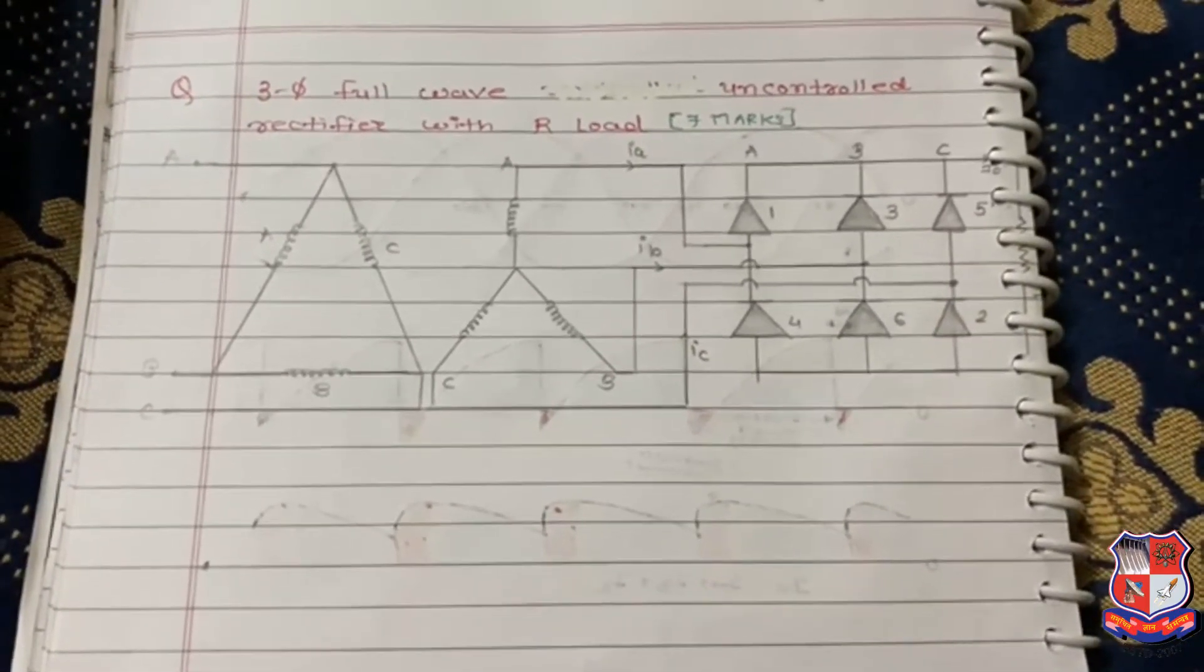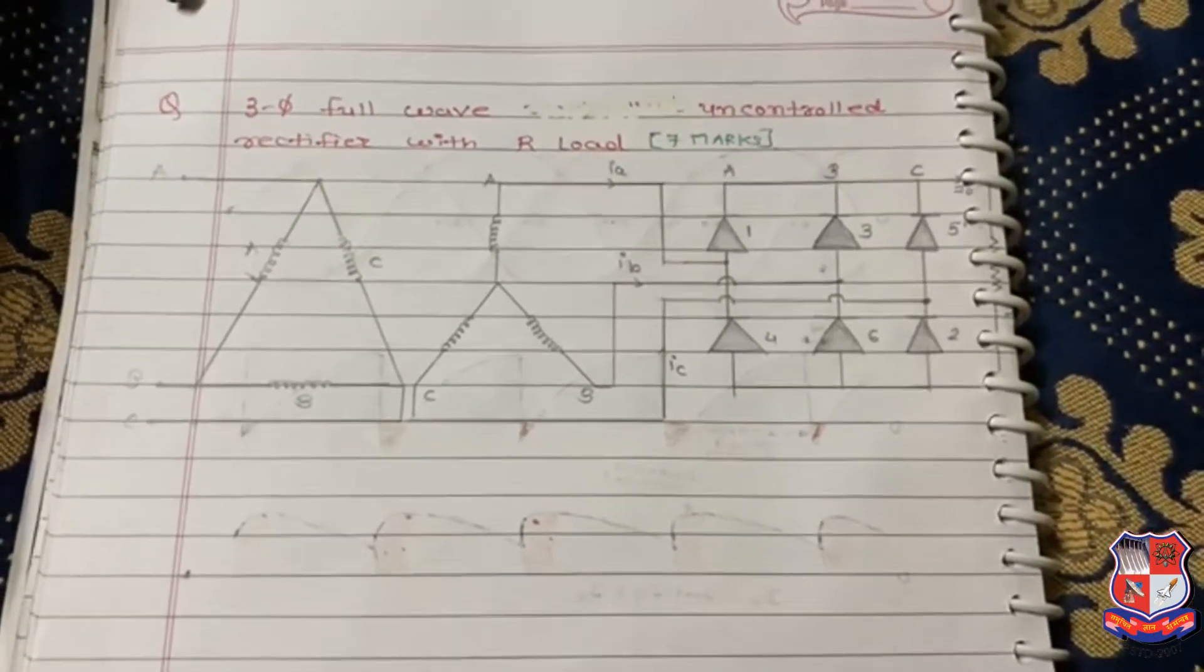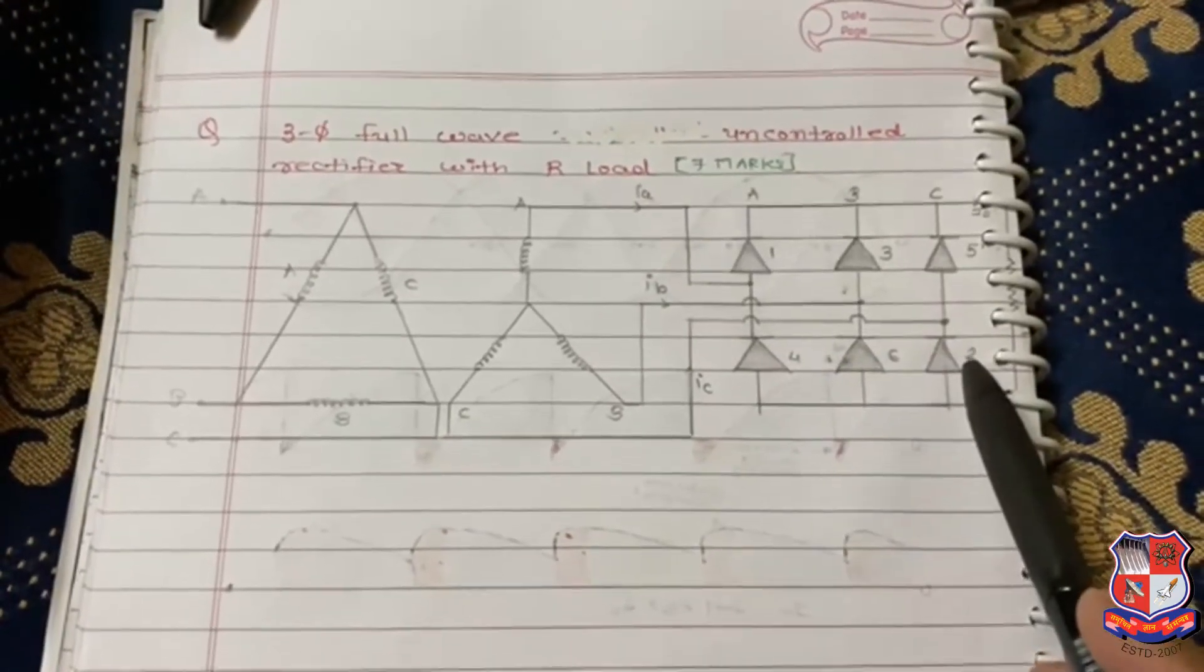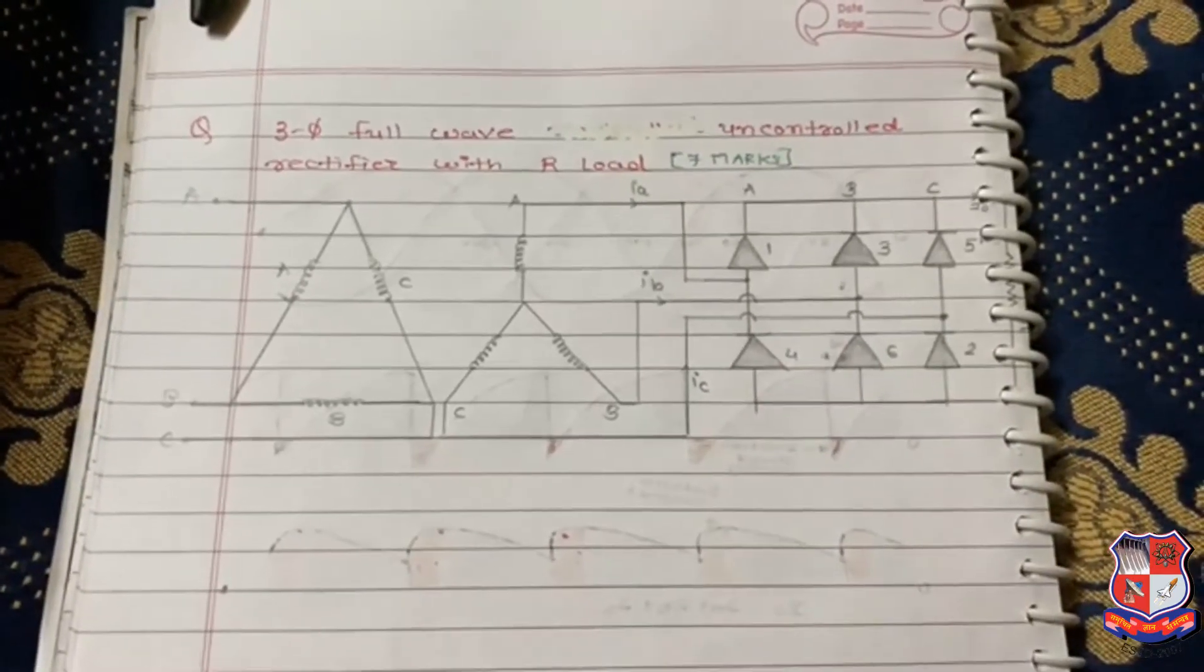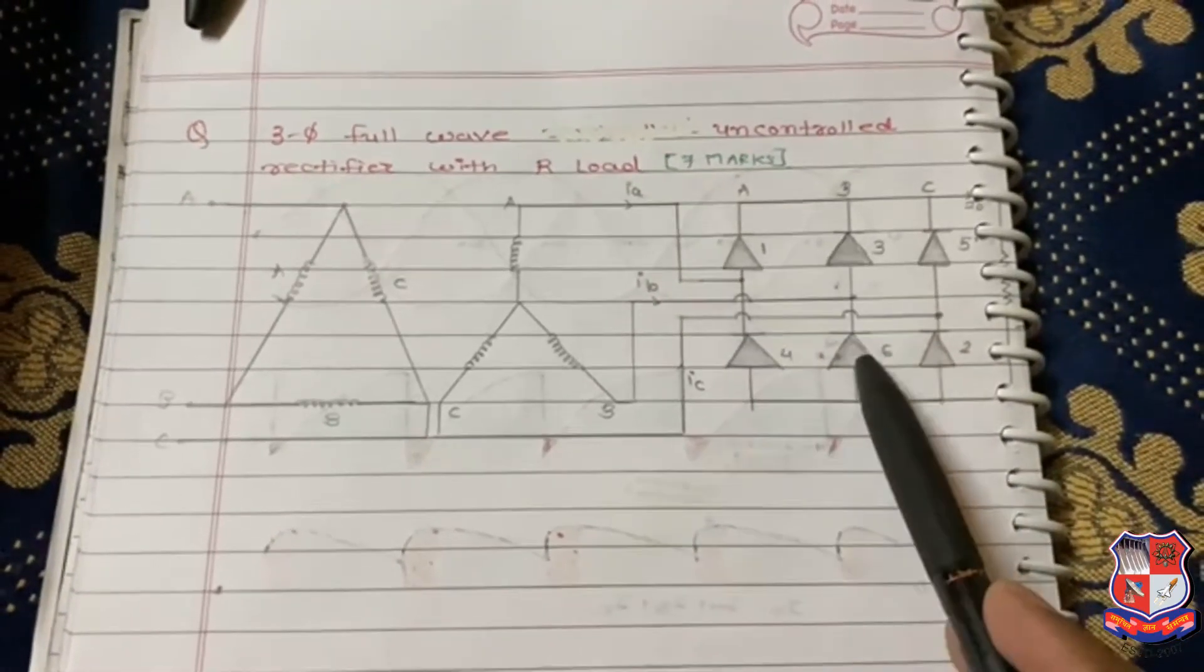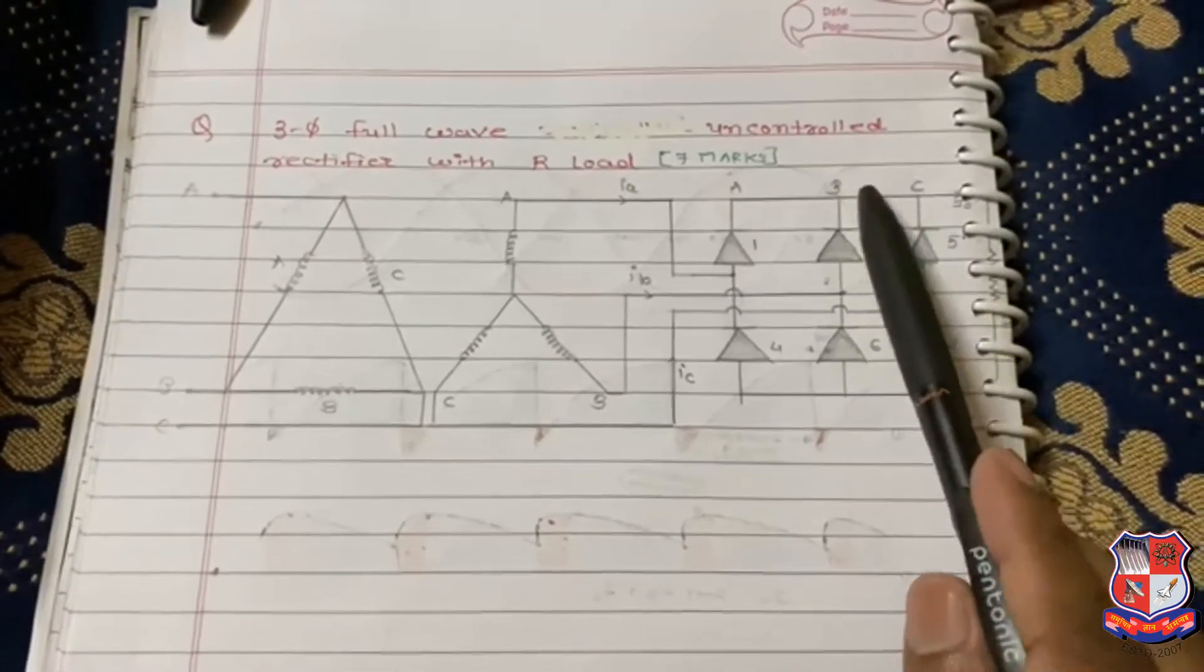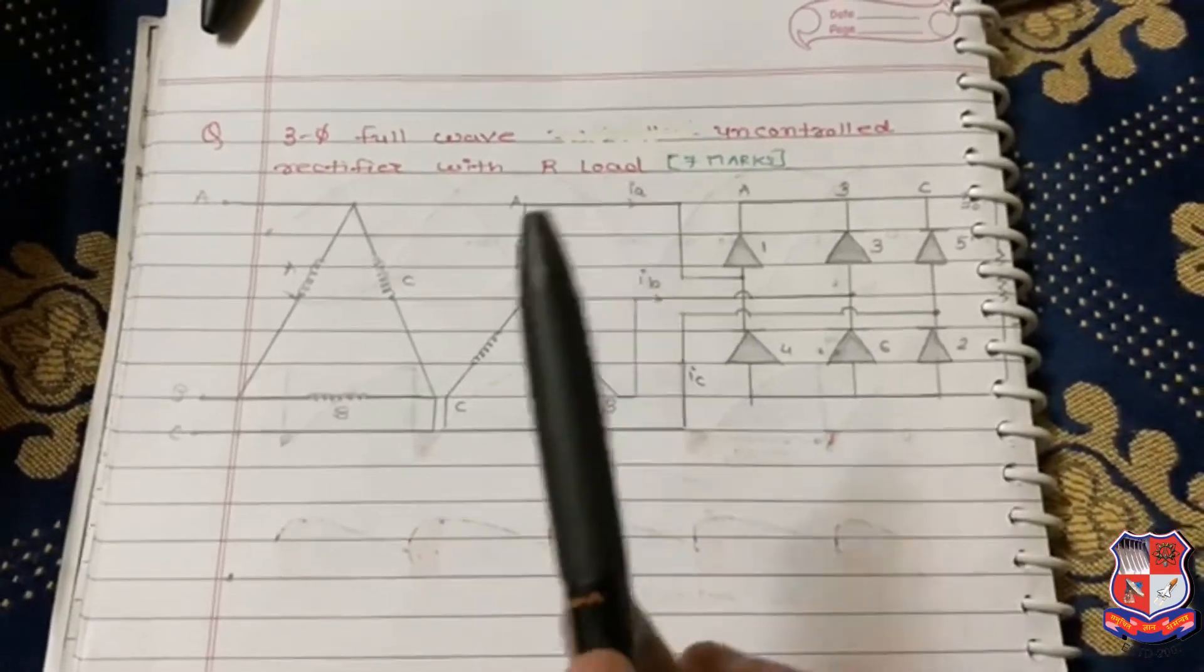The main difference between half and full wave rectifier is that there are six switches in full bridge and three switches in half bridge. Here, for every phase two switches are there: for phase A one and four, for phase B three and six, for phase C five and two, and the load is connected like this.